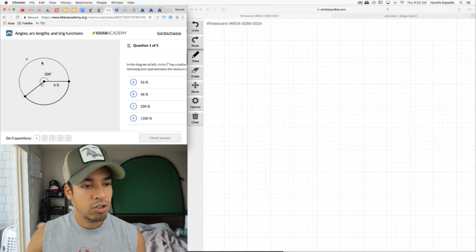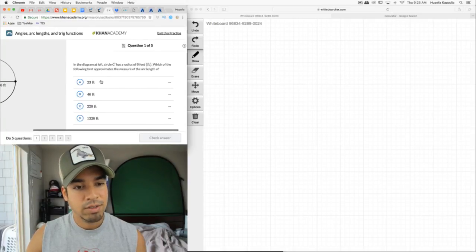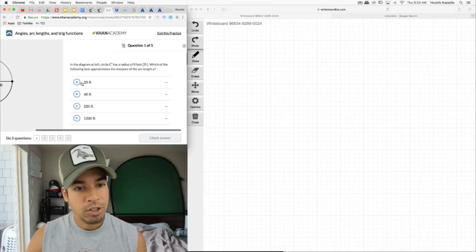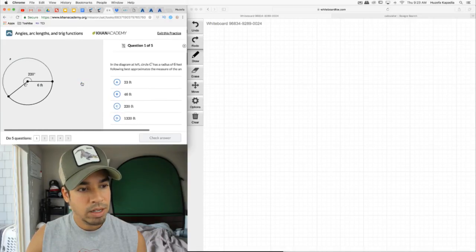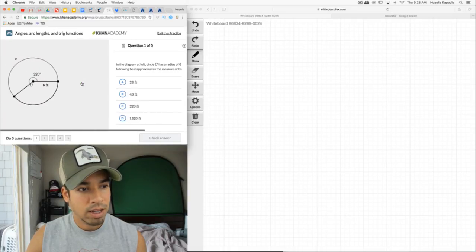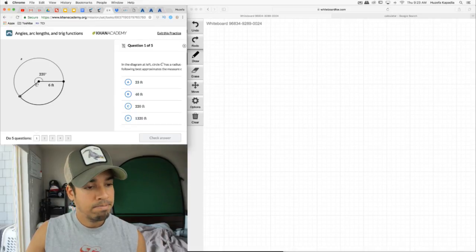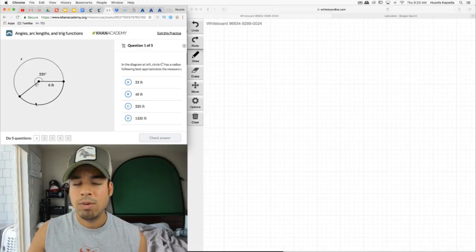All right, let's do it. So first we have this circle, we have 220 degrees. So it says in the diagram at left, circle C has a radius of 6 feet. Which of the following describes the approximate measure of the arc length? So it has a radius of 6 feet, which of the following best approximates the measure of the arc length of S?